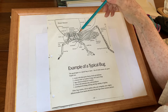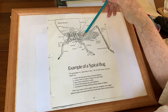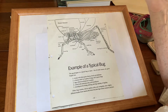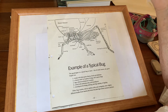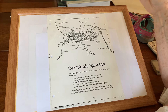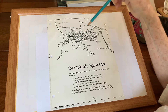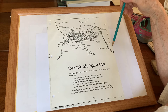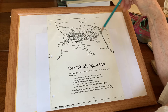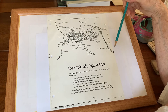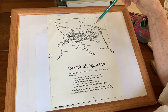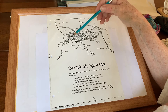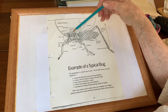An insect has three pairs of legs — pairs means two, so it has a total of six legs. They have five joints in them, each one of them, although some of the joints are longer on different legs. And if it has wings, they are attached to the thorax as well.